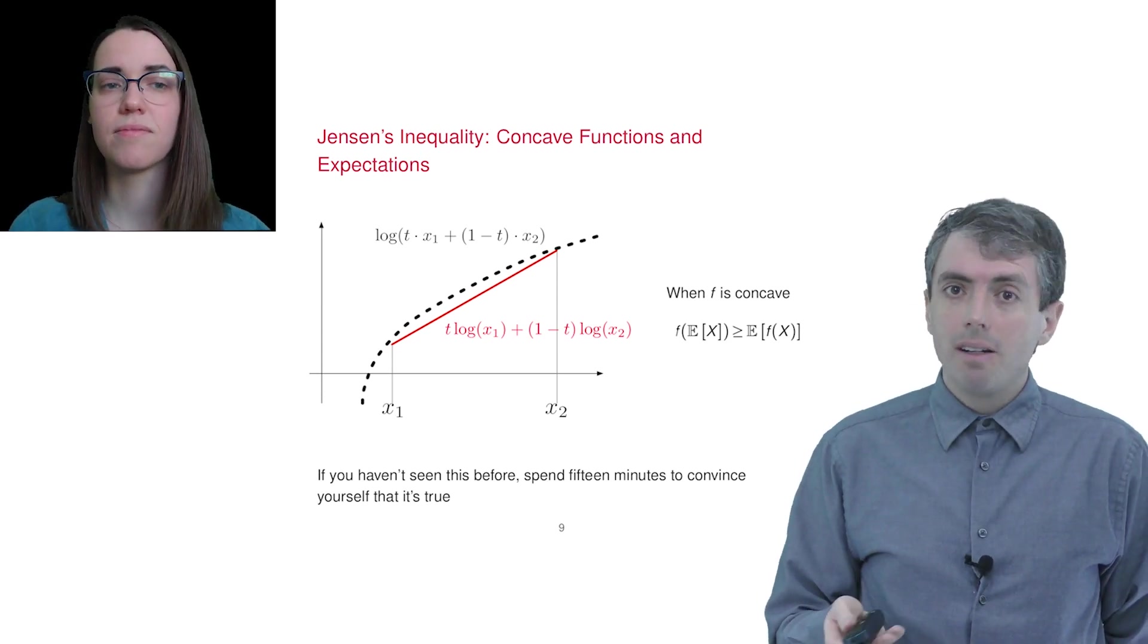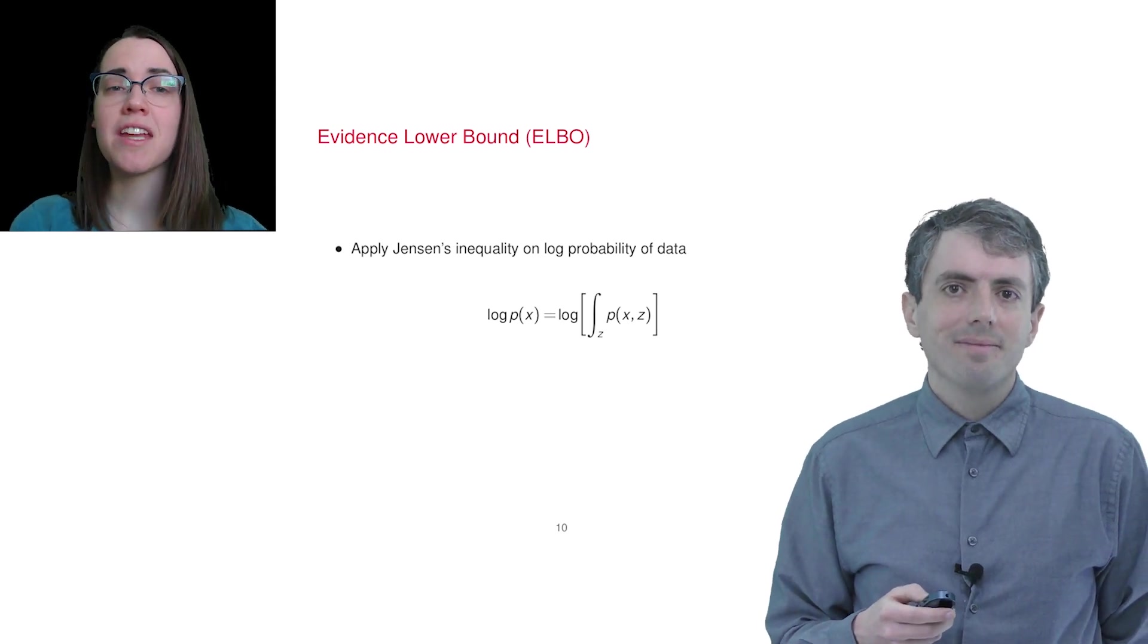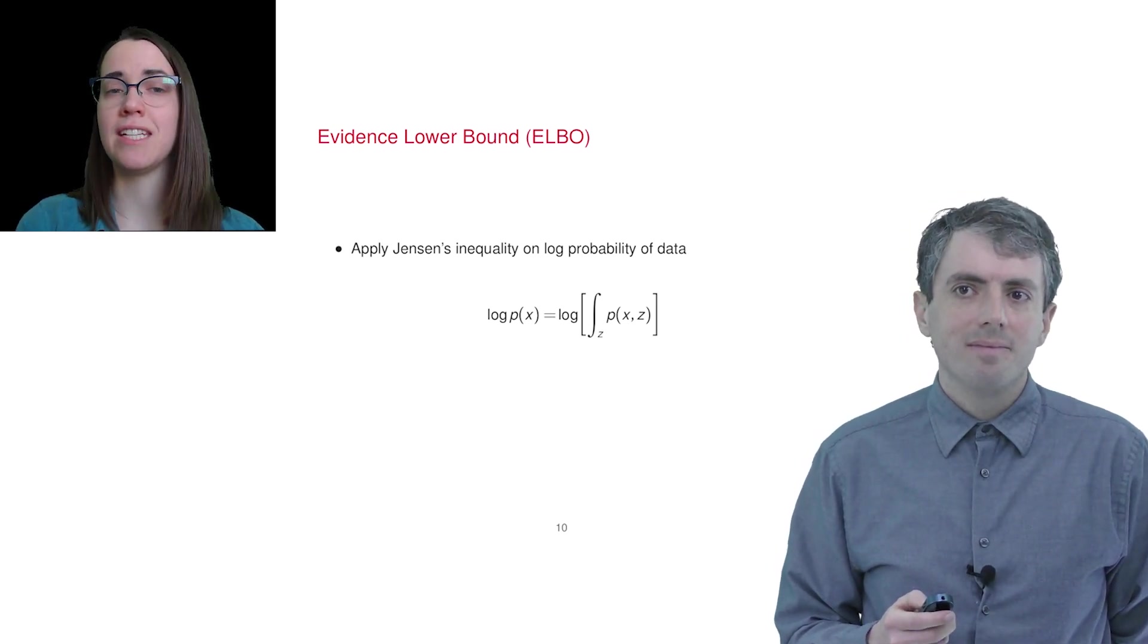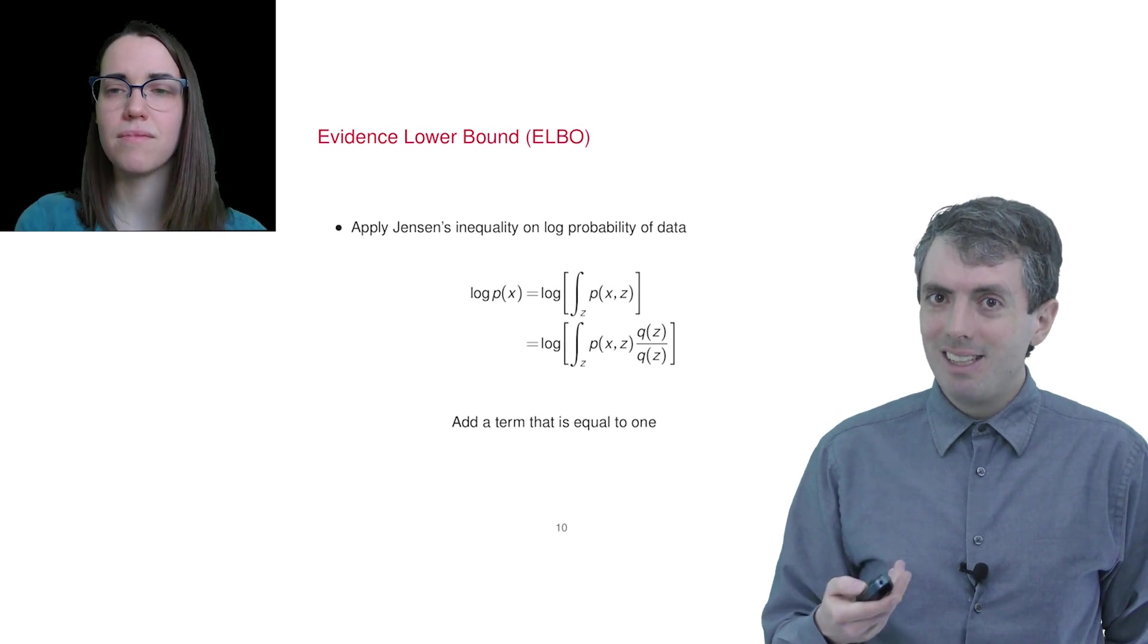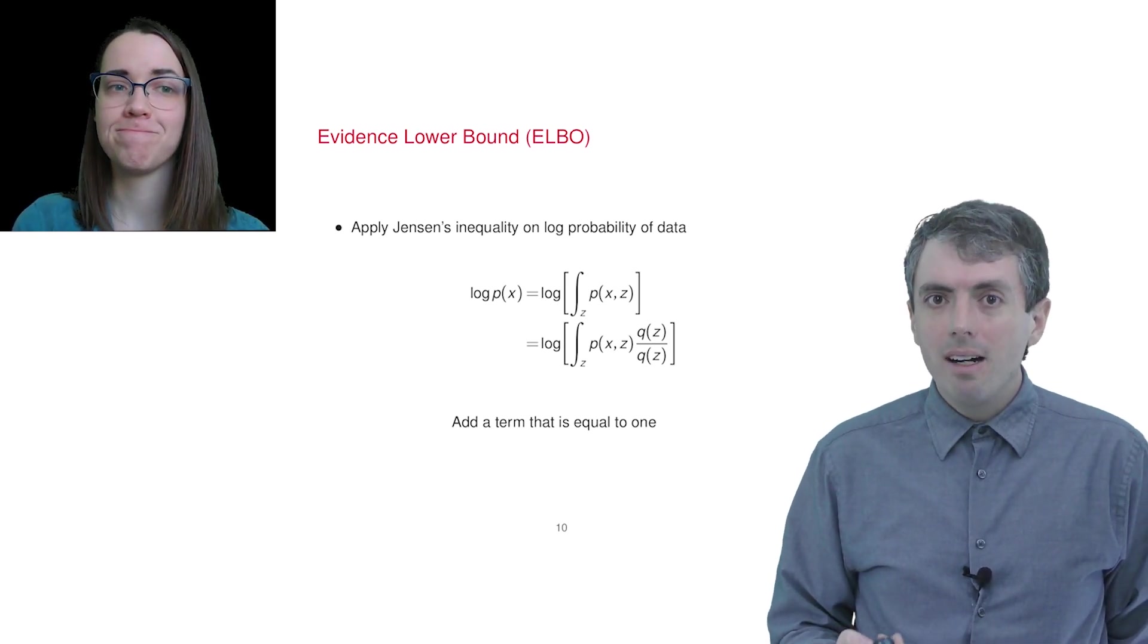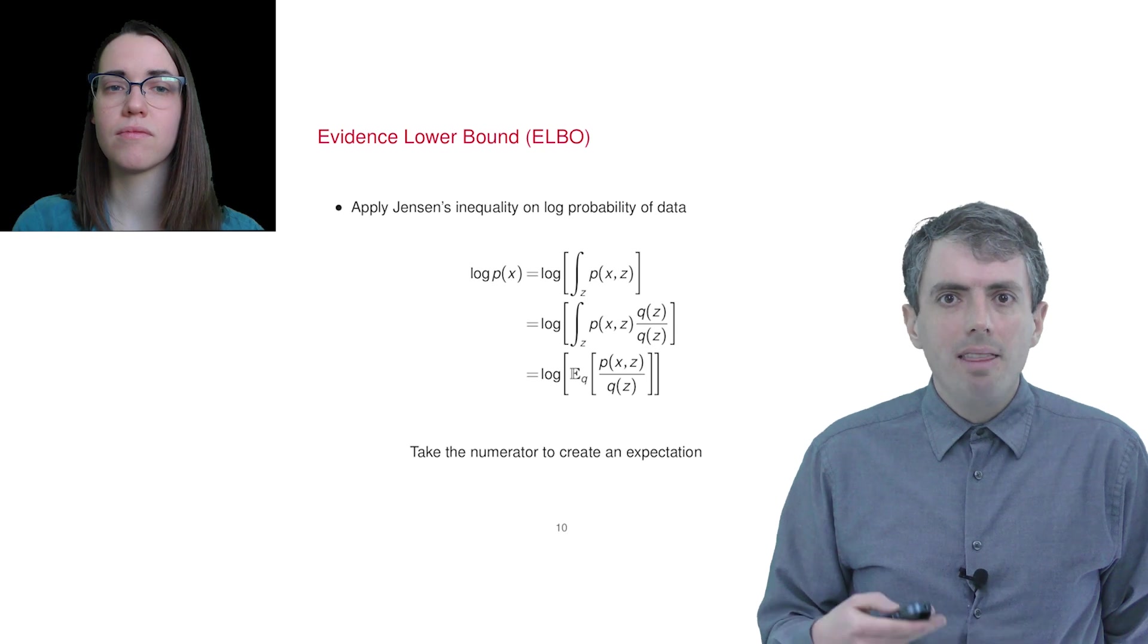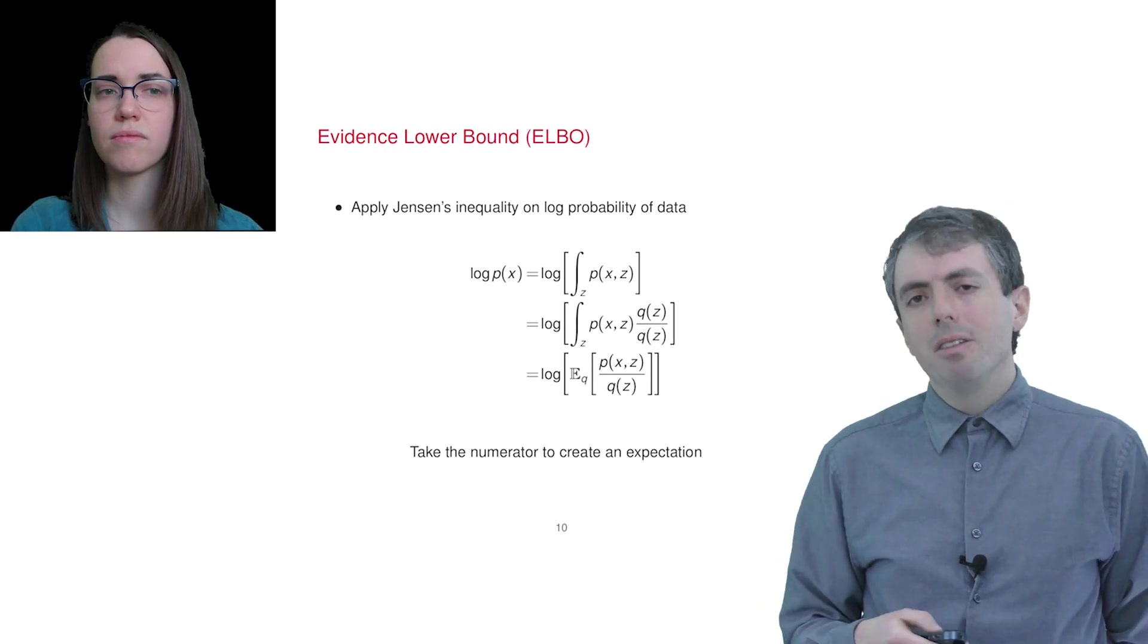And in the case of variational inference, we'll have an expectation over the variational distribution, and we'll have the log as part of our objective. Our objective function is the log probability of the data, which we get from our generative story, which I mentioned in a previous video. The higher the number is, the better we do at explaining our data. So let's start off by integrating over all latent variables z, and then we'll multiply by one. But in this case, multiplying by one is multiplying by q of z over q of z. Right. And we do this because we want to be able to write this as an expectation.